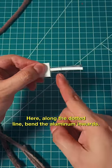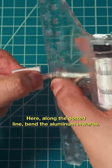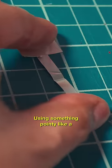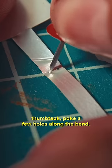Here, along the dotted line, bend the aluminum inwards. Using something pointy like a thumbtack, poke a few holes along the bend.